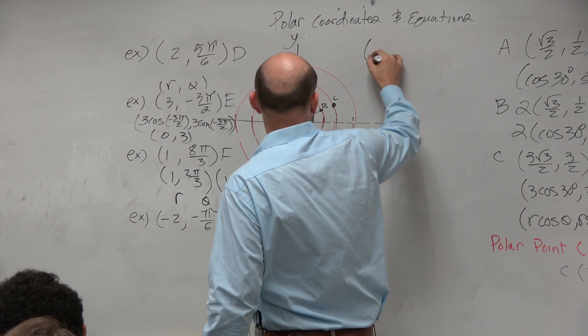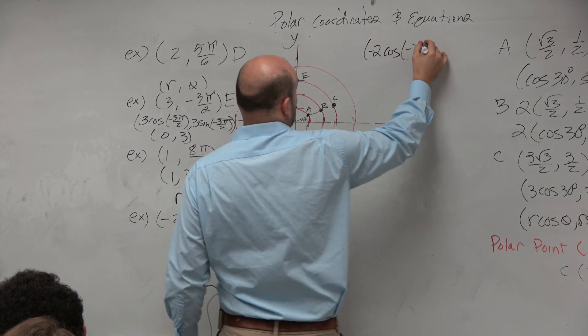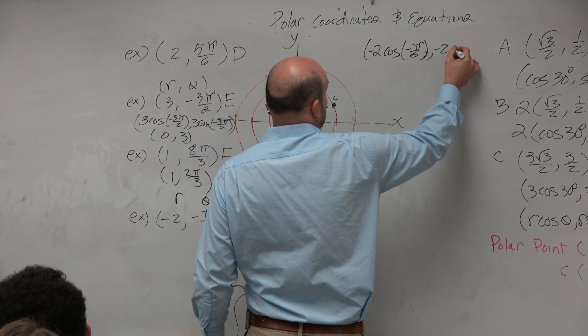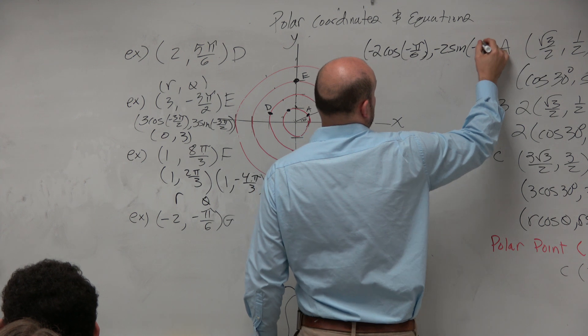So I'm going to put the work up here. So really, this can be written as negative 2 cosine of negative pi over 6, and comma negative 2 sine of negative pi over 6.